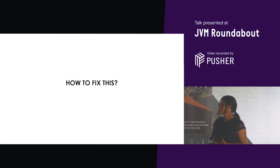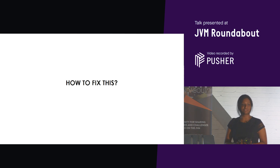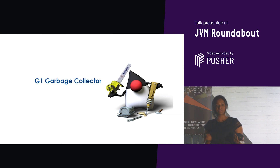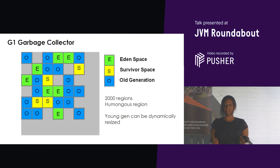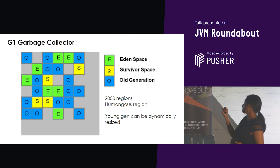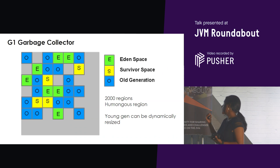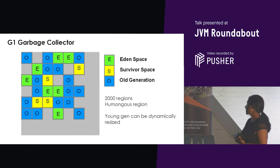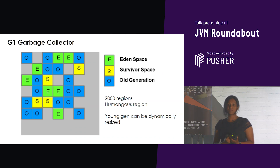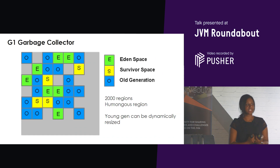So how did I fix it? This was a Java 8 application, and at that time G1 garbage collector was not the default — it became the default from Java 9. So I started looking at G1. G1 works quite differently from the traditional garbage collectors. G1 is one memory area divided into multiple regions — almost 2,000 regions — which map logically into Eden space, survivor space, and old generation. There's a fourth type called the humongous region, but I'll leave that out. The key difference that really attracted me was that the young generation in the G1 garbage collector can be dynamically resized.